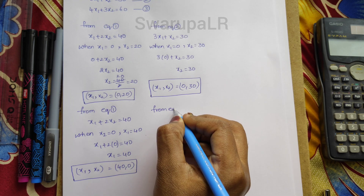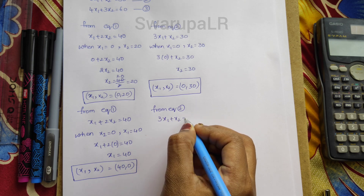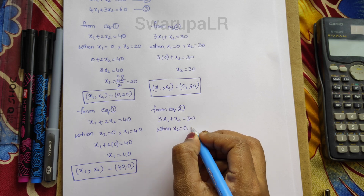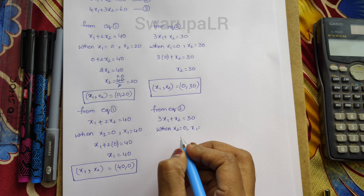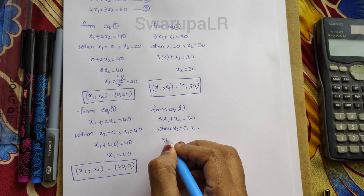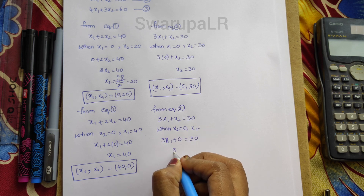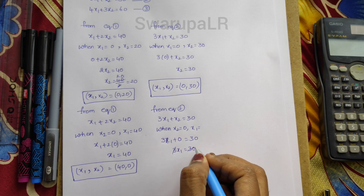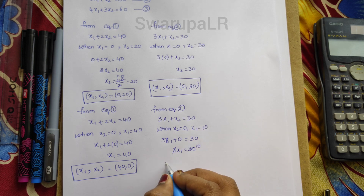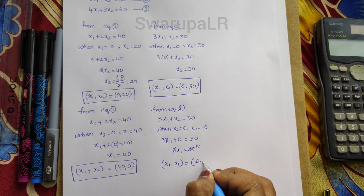From equation 2: 3x1 plus x2 equals 30. When x2 equals 0, we have to find x1. 3x1 plus 0 equals 30, so 3x1 equals 30, giving x1 equals 10. Therefore x1 comma x2 values are 10 comma 0.